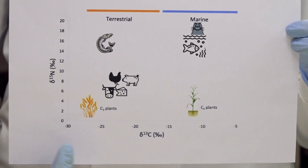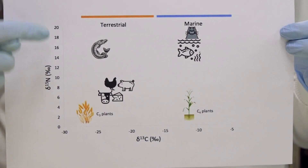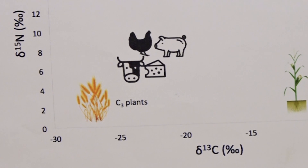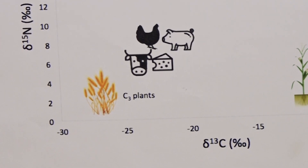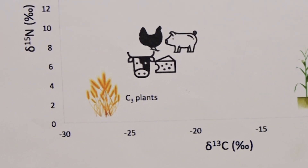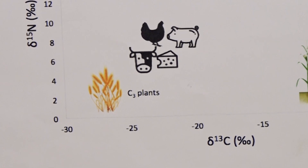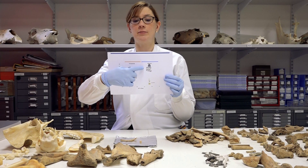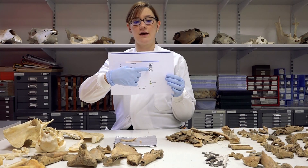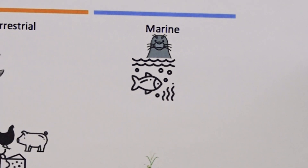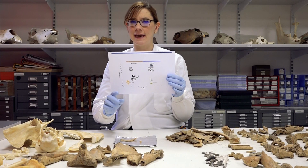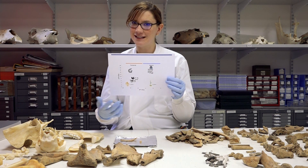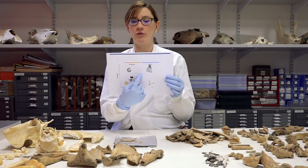We look at carbon and nitrogen. If you're plotting down here on the graph with a low carbon and low nitrogen, then you're probably eating a plant-based diet with some animal foods. High carbon and high nitrogen puts you over here, where you're looking at seafood. If you're eating some seafood and some land animal protein, you'd plot right in the middle.